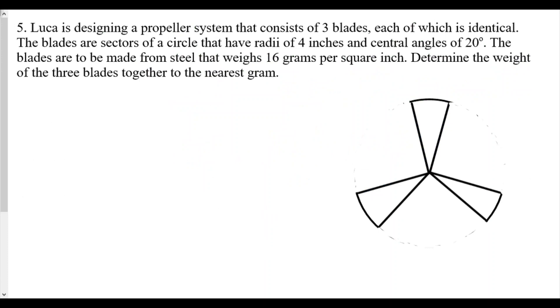Question 5. Luca is designing a propeller system that consists of three blades, each of which is identical. The blades are sectors of a circle that have radii of 4 inches and central angles of 20 degrees. So each one of these is the same. So the angles are each 20 degrees and each of the radii are 4. Now it says here that blades are made from steel that weighs 16 grams per square inch.